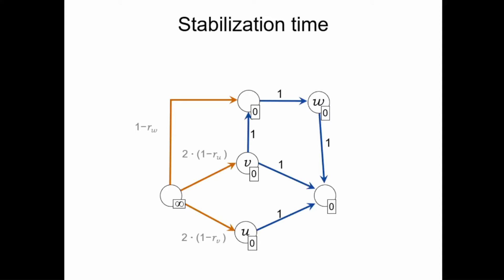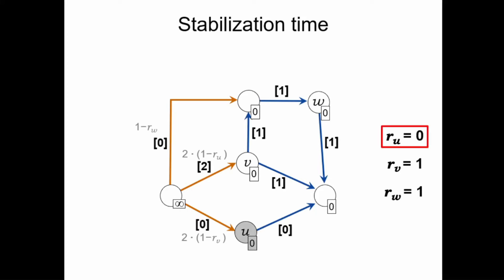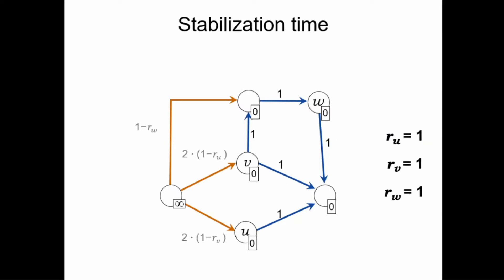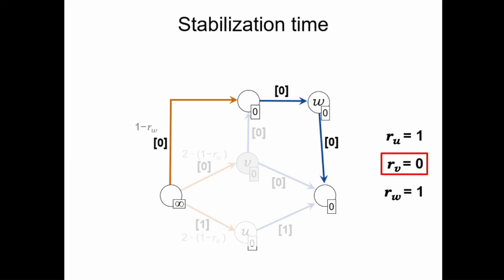Looking at an example system that is essentially a combination of our previous two examples: initially each node has an announced recovery rate of one. If U is the first node to report the default because it has no assets, this already gives a valid payment configuration and the system stabilizes after this first step. On the other hand, if V is the first node to report the default, there will be no payment going to the upper part of the system, which is equivalent to our previous example that never stabilizes. So based on our choice of the first node to make an update, the system can either stabilize after one step or not stabilize at all.